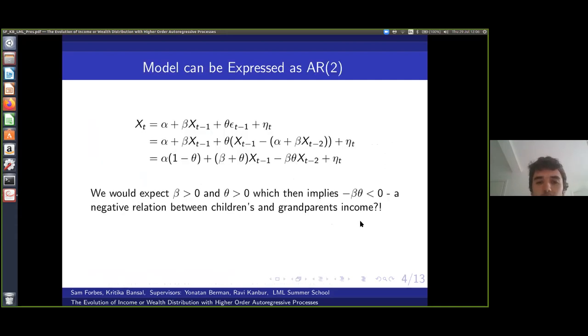If you substitute for epsilon_t, you can rearrange and express that same model as an AR(2) process, so you have X_{t-2}, the income of grandparents. What's interesting about this is that you would expect beta and theta to be greater than zero - a positive relationship between income of parents and children, and some cultural or genetic factor between parents and children. But this implies the coefficient of the grandparents is negative, minus beta theta. Would you then think this implies a negative relationship between children's and grandparents' income? You wouldn't expect that, but we're going to come back to this point later on.